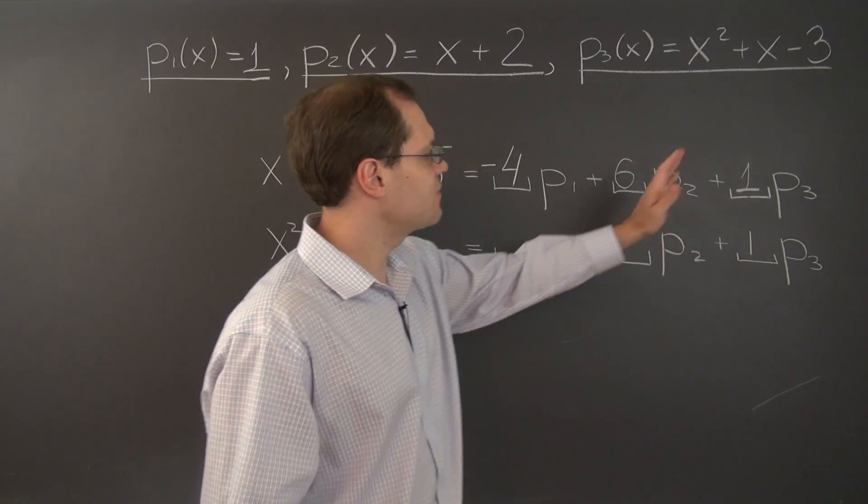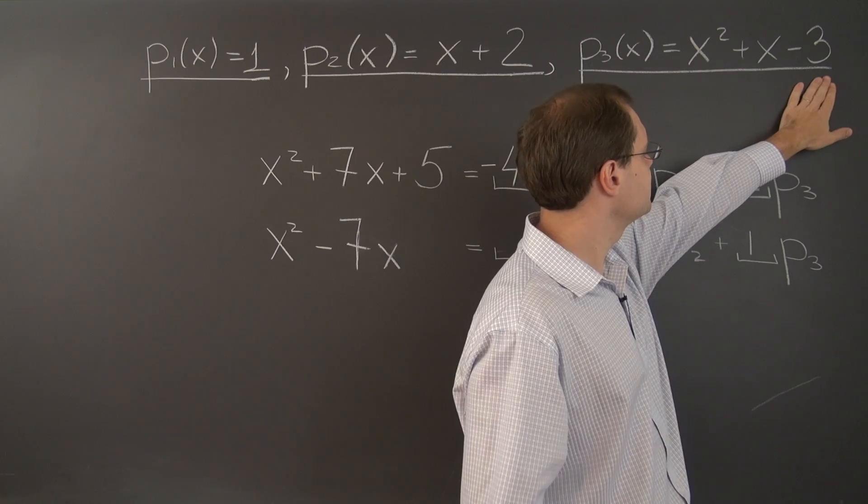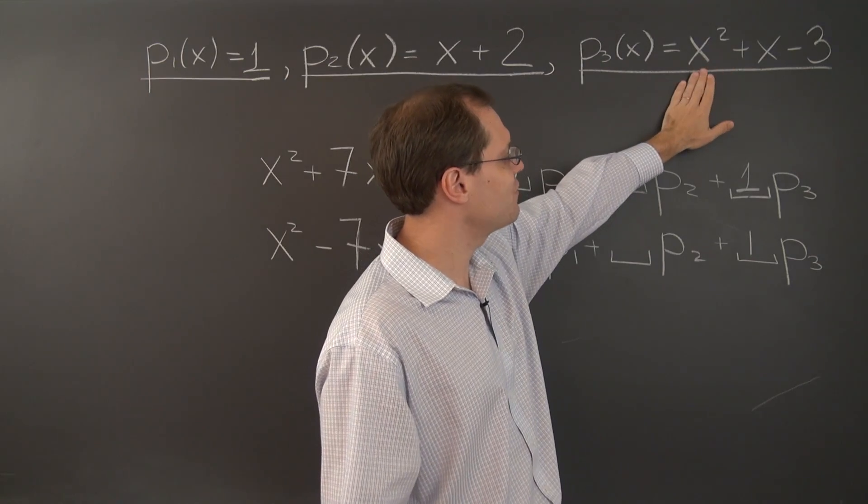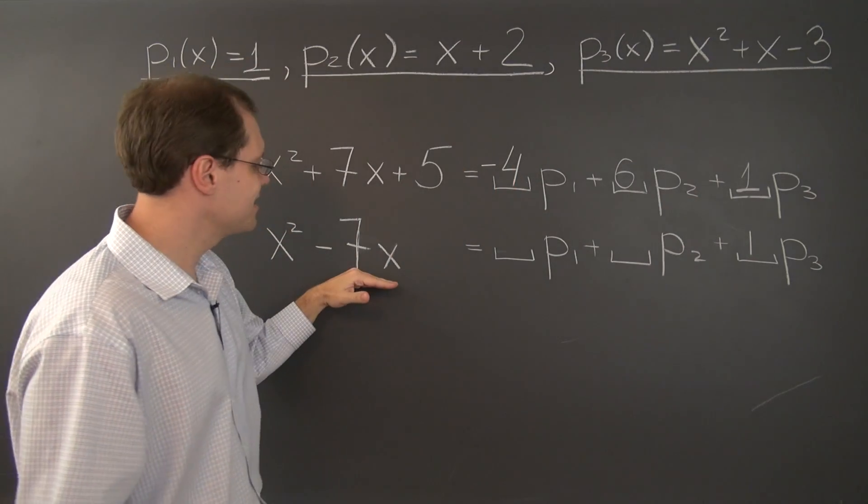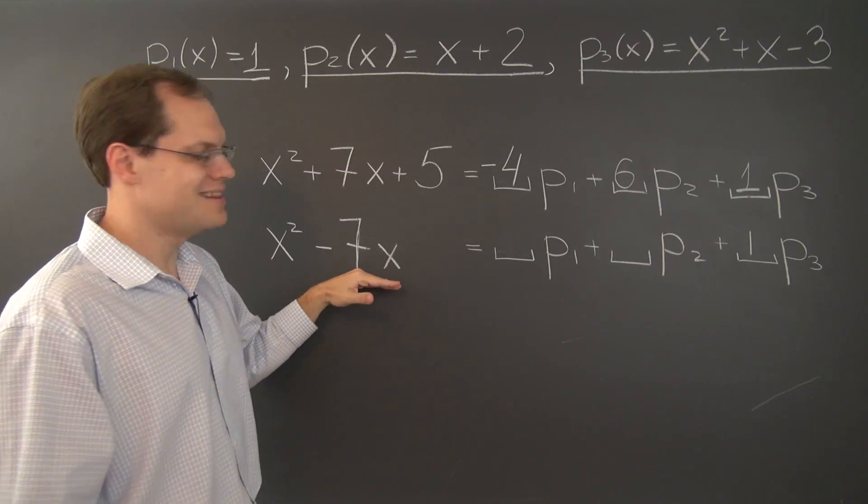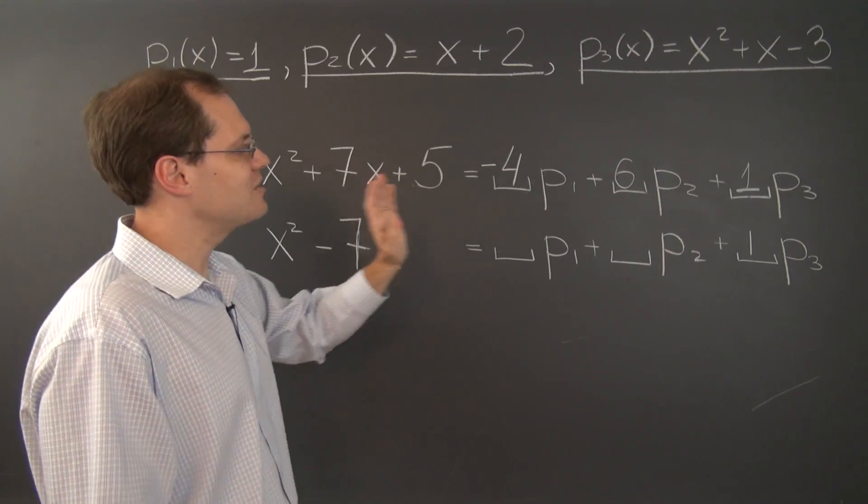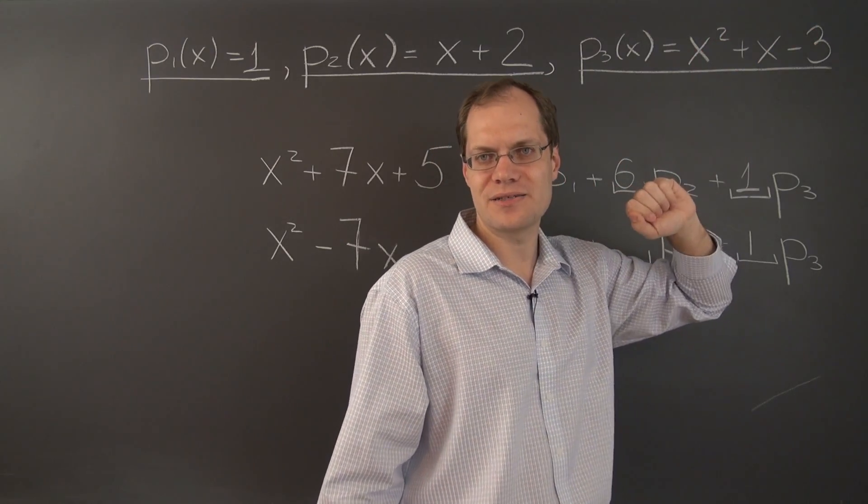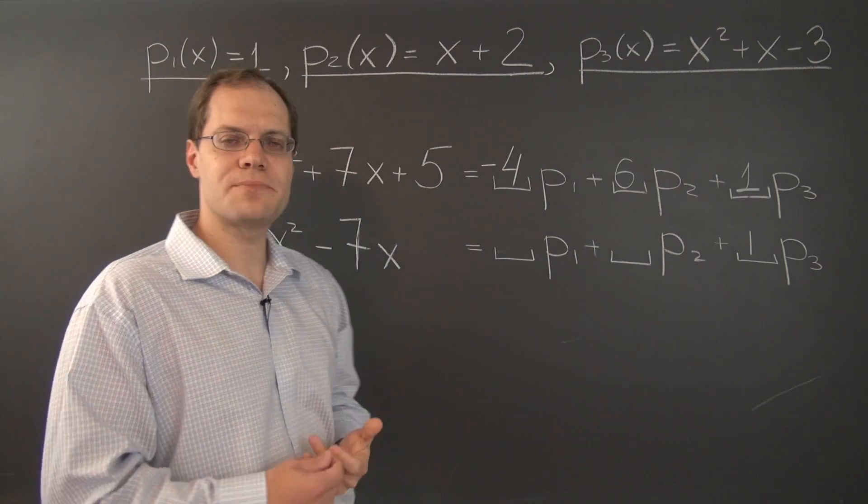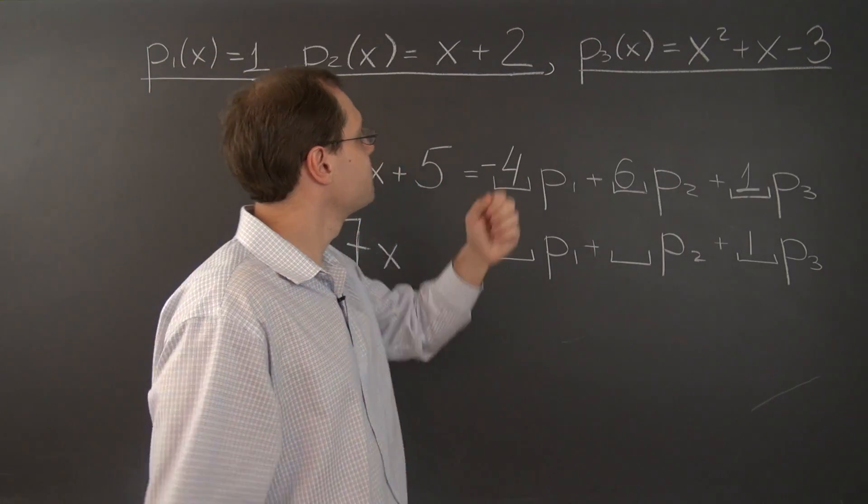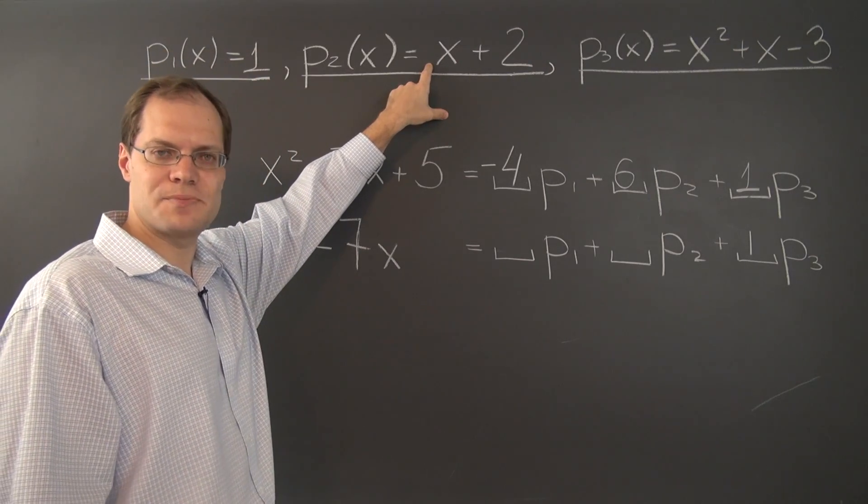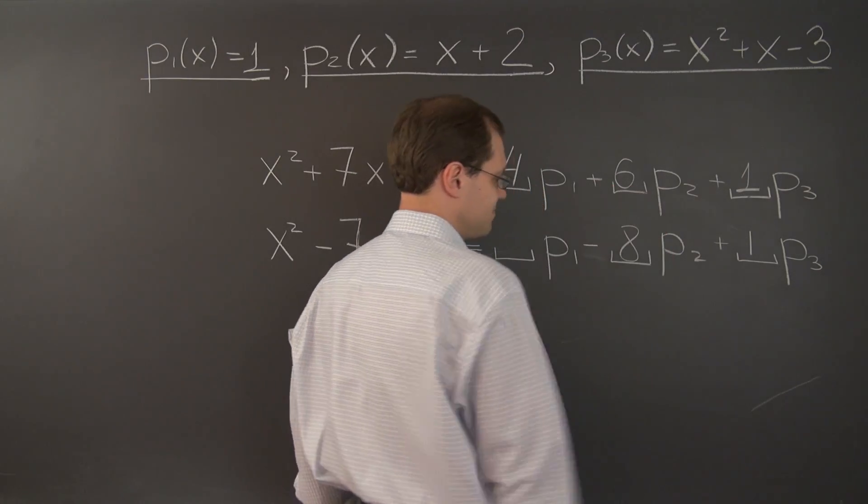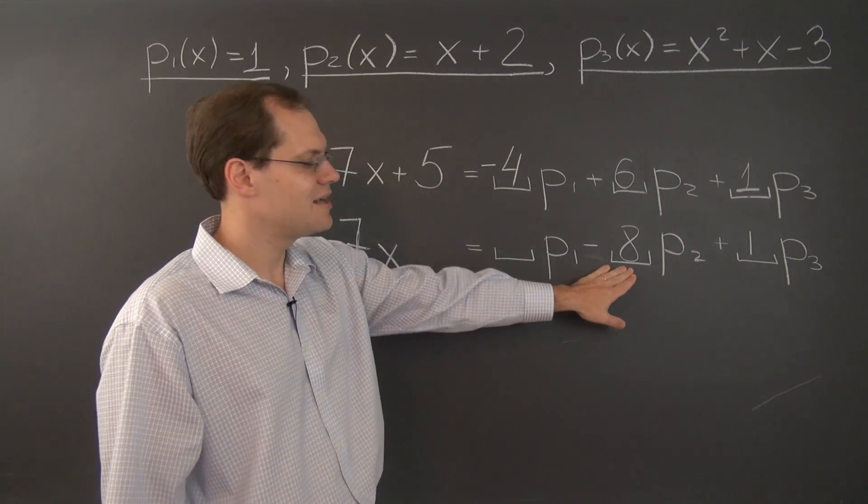And we next have to get from minus 3 to, excuse me, messed up. So we've taken care of x squared. We will next take care of 7x, excuse me, negative 7x. And so far, we have 1x, so we have to go from 1 of x to negative 7 of x. In other words, we need to subtract 8x from what we already have. And because this x coefficient is 1 in this polynomial, we have to take precisely minus 8 of it. So the second coefficient is minus 8.